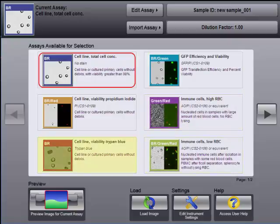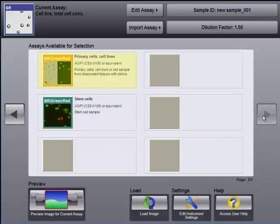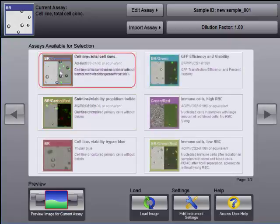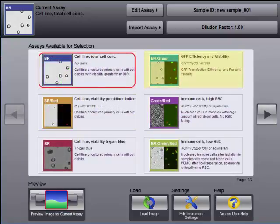splenocytes, cell lines, tumor cell suspensions, stem cells, and other primary cells. Users can also determine GFP transfection efficiency and viability.